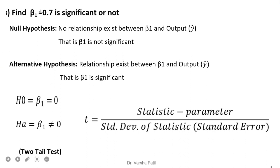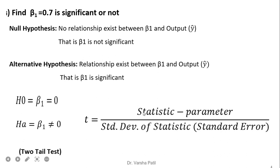Now to check whether beta 1 is significant or not, we are using hypothesis testing. We keep the null hypothesis in which there is no relationship between beta 1 and output — that is beta 1 is not significant. In the alternative hypothesis we keep that beta 1 is significant and there is a relationship between beta 1 and output. That is, null hypothesis is beta 1 equals 0 and alternative hypothesis is beta 1 is not equal to 0. As it is not equal to 0, it becomes a two-tailed test. The formula for t-test is: statistic minus parameter divided by standard deviation of the statistic, that is the standard error. This value we got from regression is 0.7, and the parameter for the null hypothesis is 0.